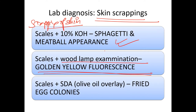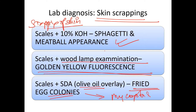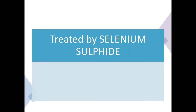When scales are cultured on Sabouraud's dextrose agar (SDA) with olive oil overlay, we see fried egg colonies. Note: fried egg colonies are also seen in Mycoplasma, which is a bacterium. To summarize tinea versicolor: KOH shows spaghetti and meatball appearance, Wood's lamp shows golden yellow fluorescence, and SDA shows fried egg colonies.